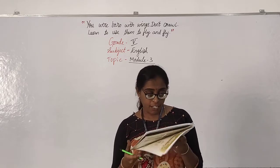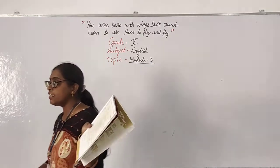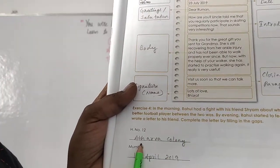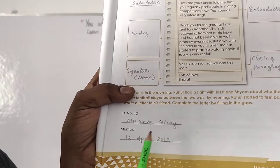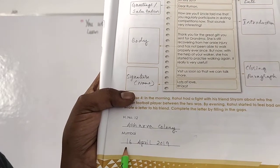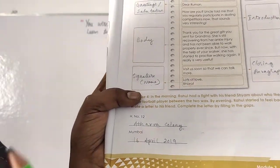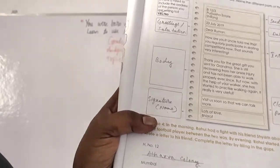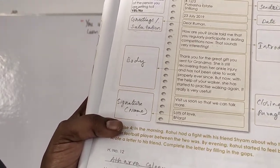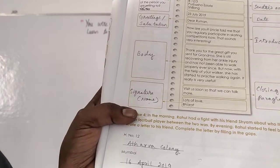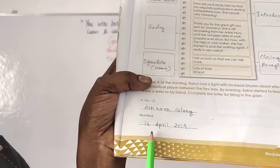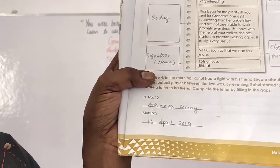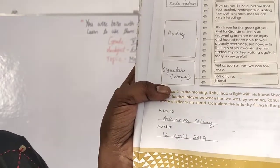Let us mention the address first — you can write something like 'Antarava Colony, Mumbai.' Then write the date: for example, 16th April 2019. You can use the present date as well.